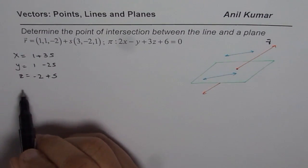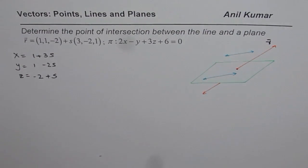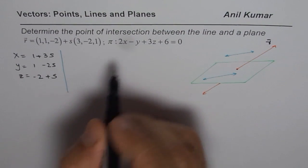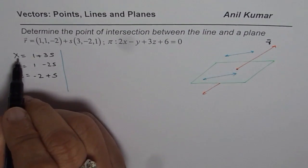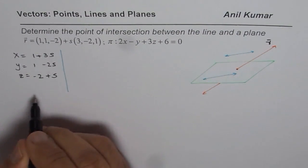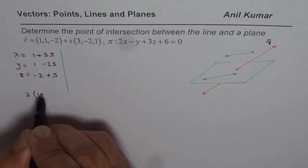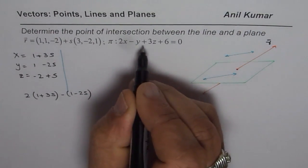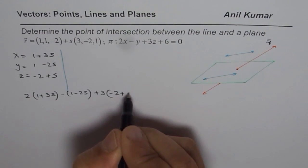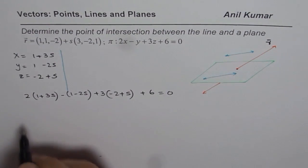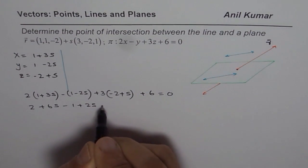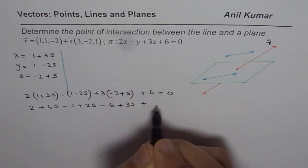If it intersects, then this point should be common. So, I can substitute this point in the equation and then solve. So that is the whole idea. So what we are given here is a plane, which is 2x minus y plus 3z plus 6 equals to 0. So in this plane, we will substitute points, point values. x is 1 plus 3S. So what we have here is 2 times 1 plus 3S minus y, minus y is 1 minus 2S plus 3z plus 3 times z is minus 2 plus S plus 6 equals to 0.